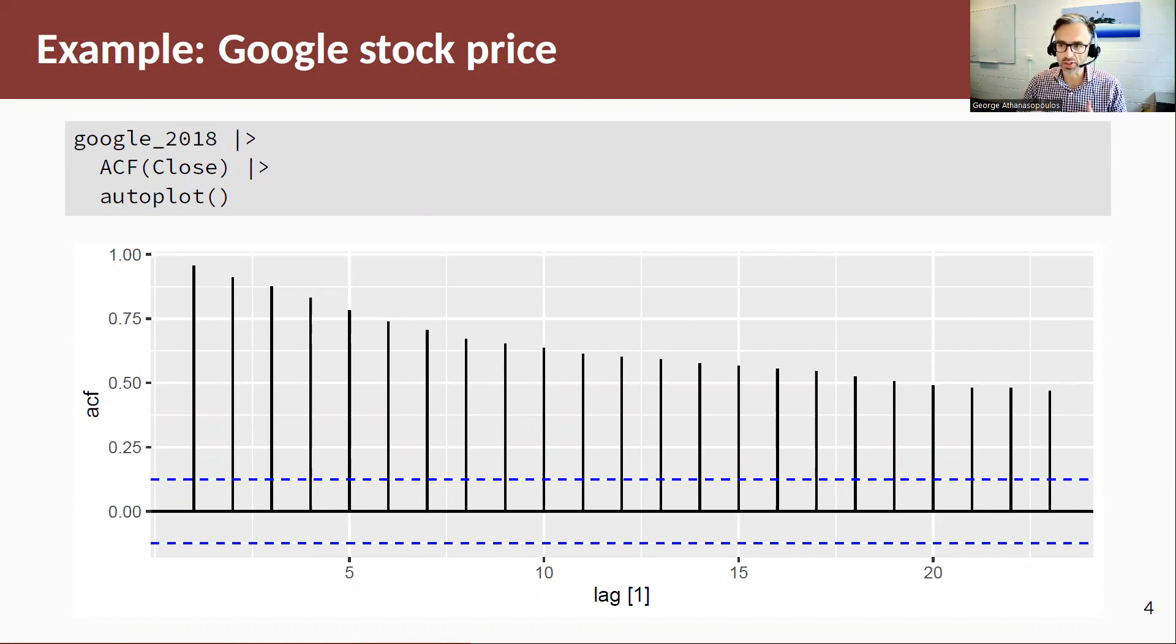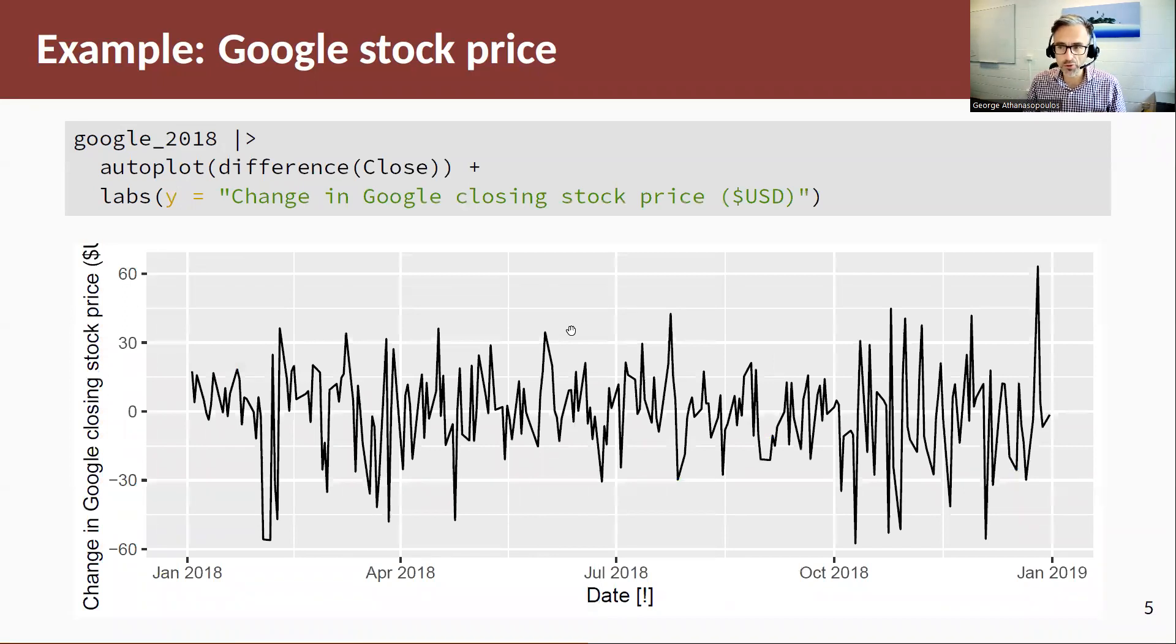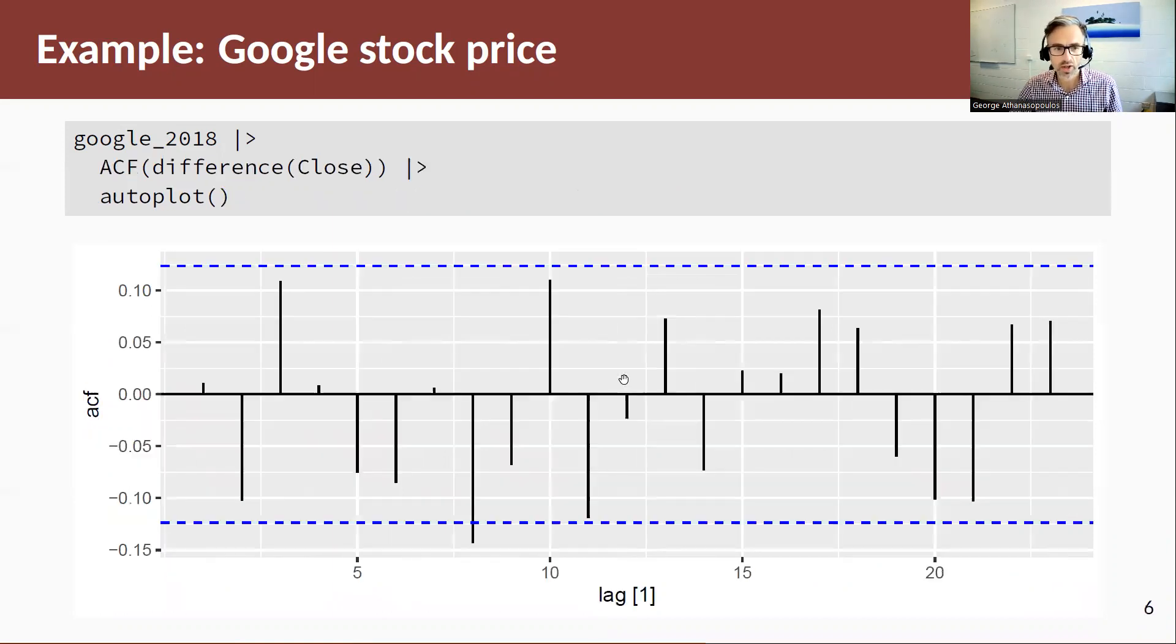When we look at the difference of this, we see some very different behavior. This is clearly now a stationary time series. Furthermore, when we look at the ACF of this difference time series, we conclude that this time series is not only stationary but it is white noise. There's one significant spike there but we can ignore that due to a type one error, the probability of a type one error.